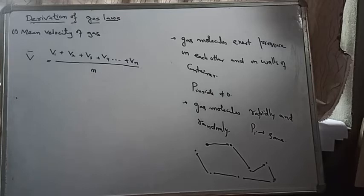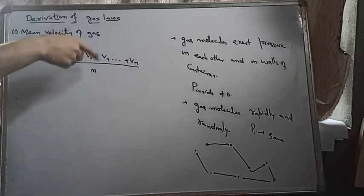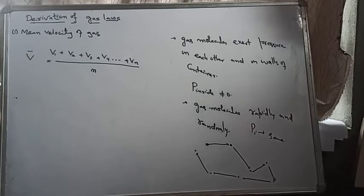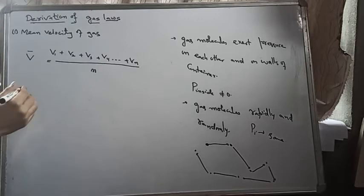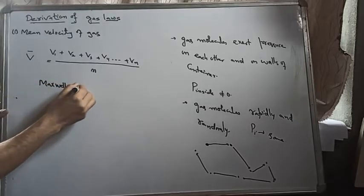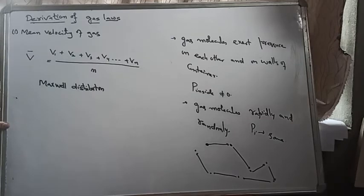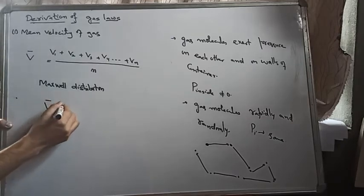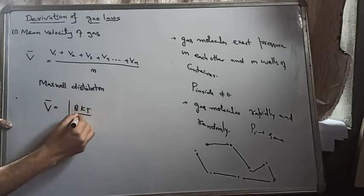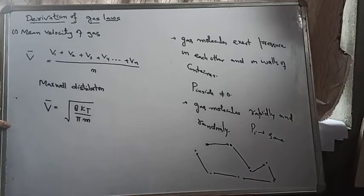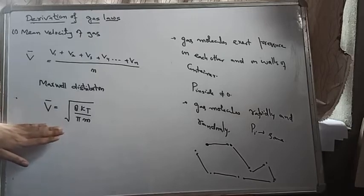You might ask: is it possible to measure the velocity of a single molecule one by one? That is not practically feasible. There is a thing called Maxwell distribution — Maxwell was a scientist who derived a formula for this average. Using his formula, you can get the average velocity of gas molecules.